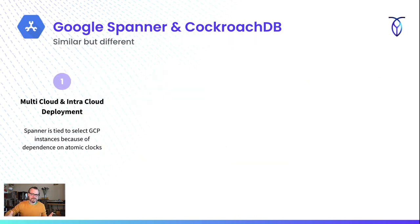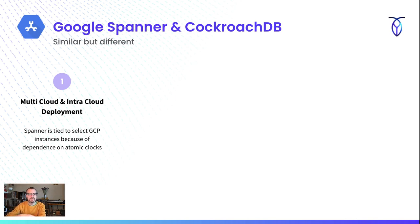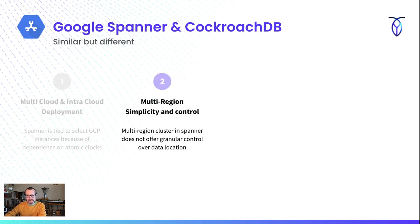So what are some of the differences? First of all, Google Spanner is tied to select GCP instances, so you can't really run it outside of GCP. Whereas CockroachDB can run across multiple different cloud providers, on any cloud provider, really anywhere. It's not tied to any explicit hardware, whereas Spanner is tied to hardware that includes a hardware atomic clock. There's a really interesting blog post on our website — "Living Without Atomic Clocks" — that gets into a lot more detail on this. So really, can I deploy this anywhere and everywhere? From a Cockroach point of view, yes — whereas Spanner is tied to particular instances.